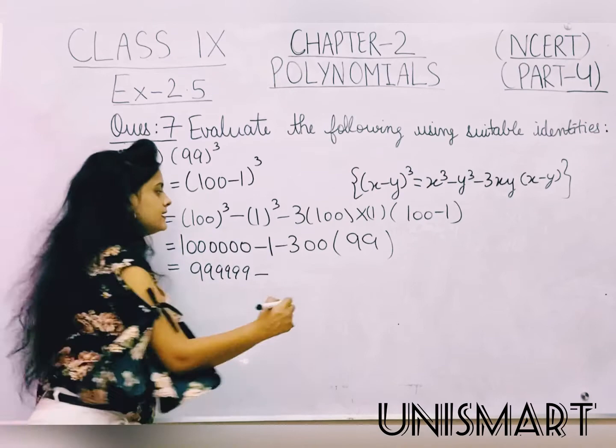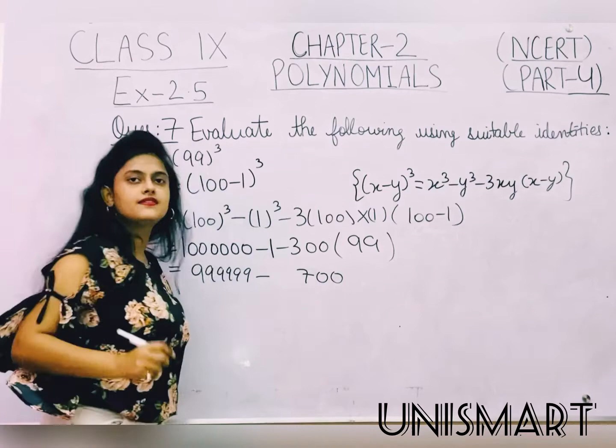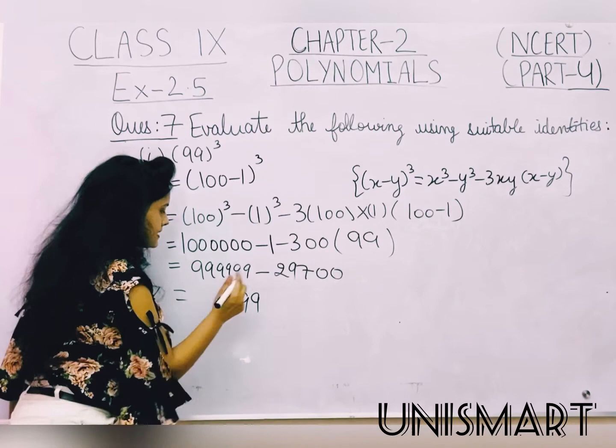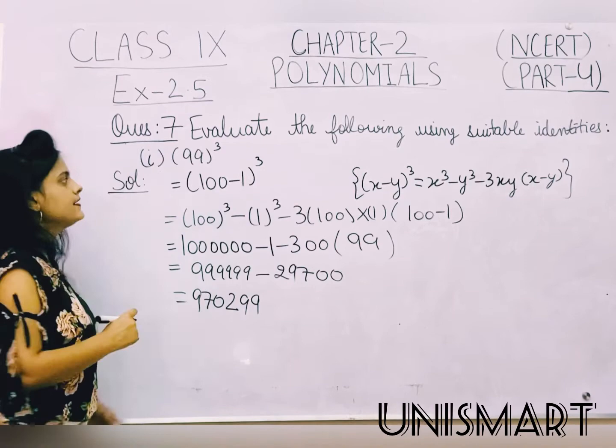Yaahan pe double zeros aayengi. 3 nines are 27 — 7, carry 2. 3 nines are 27, 27 plus 2 is 29. So the result of 300 into 99 is 29,700. Then subtracting: 9 minus 7 is 2, 9 minus 9 is 0, 9 minus 2 is 7, and 9. So iss tarike se hum ise solve karte hain.